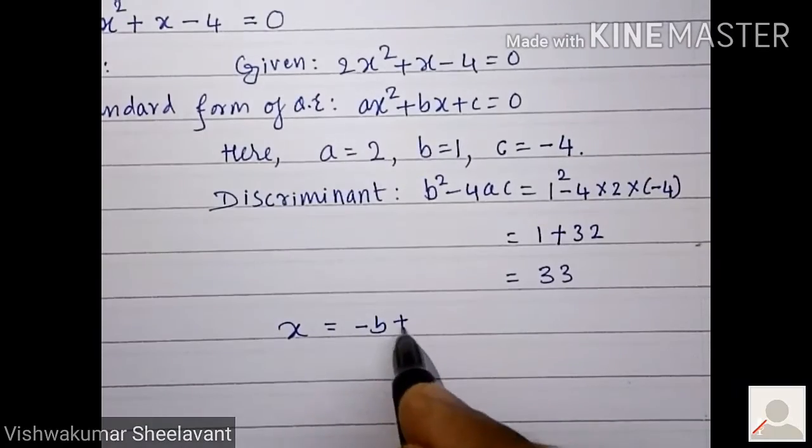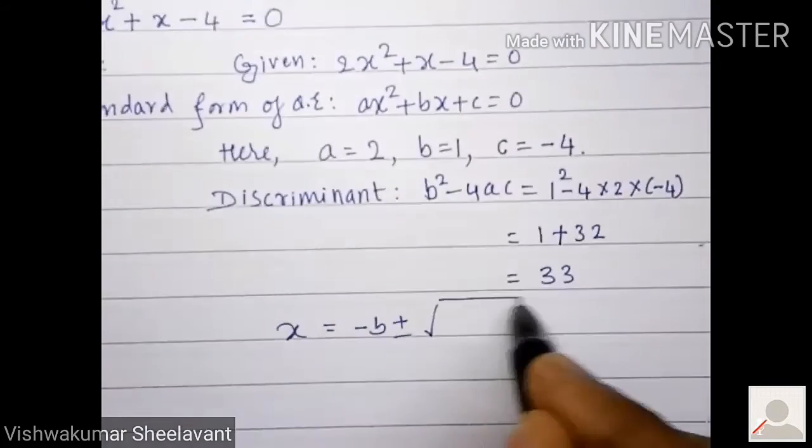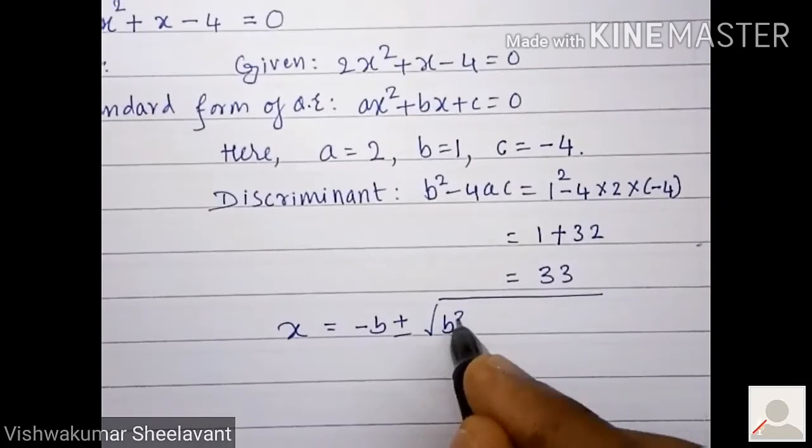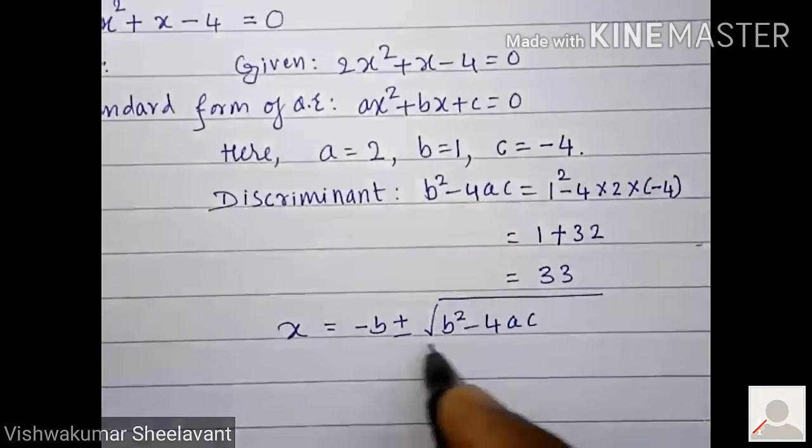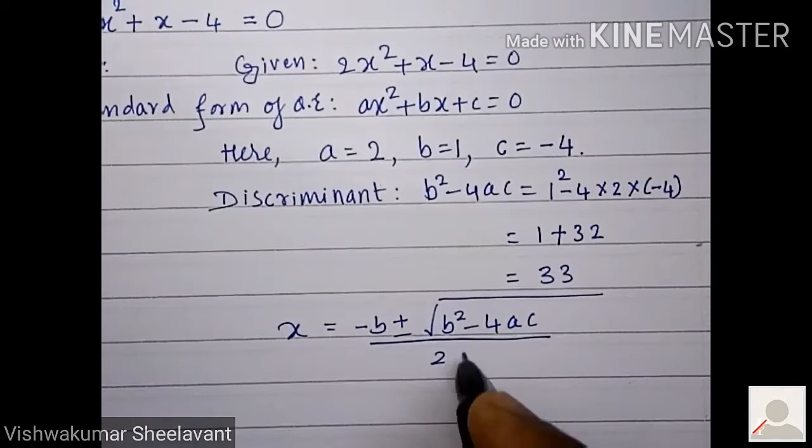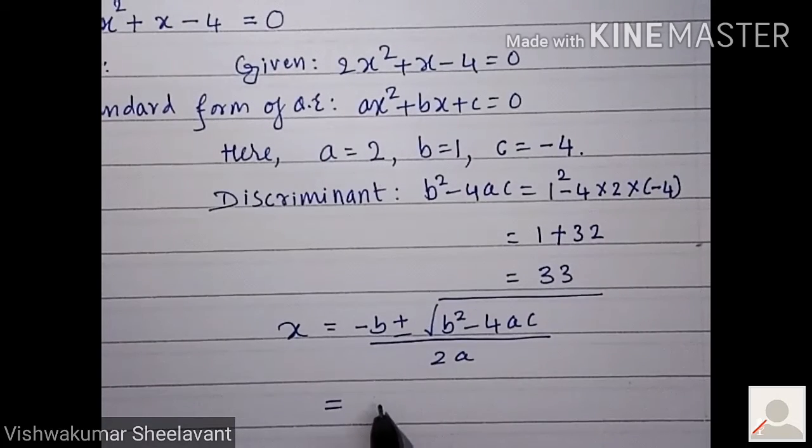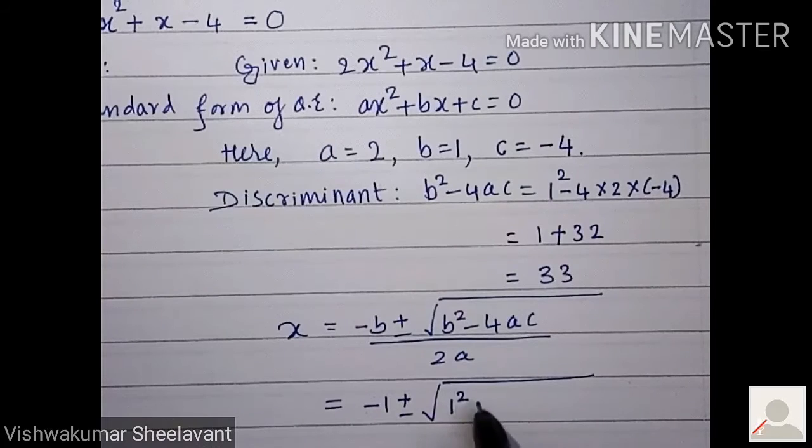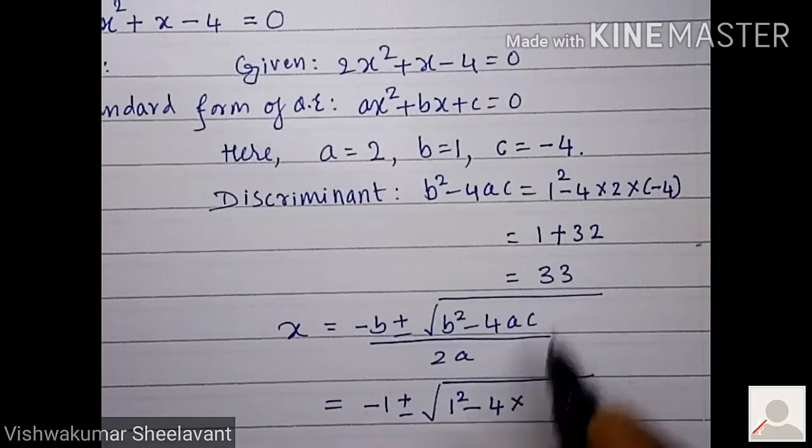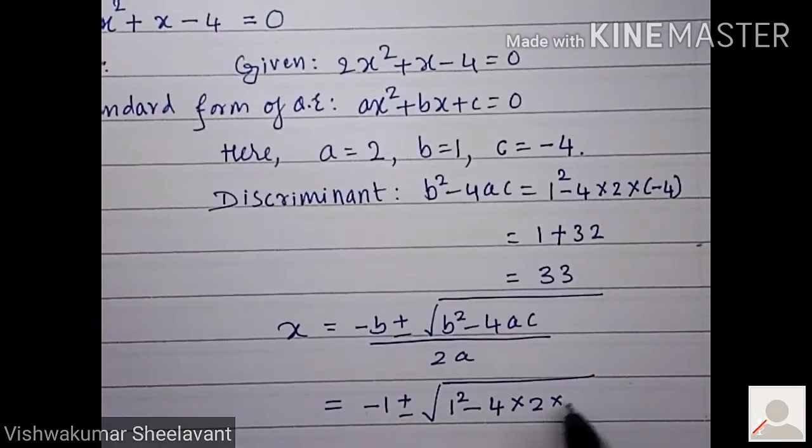The quadratic formula is minus b plus or minus under root b square minus 4ac upon 2a. Minus b means minus 1 plus or minus under root b square, which is 1 square minus 4ac. This value we have already obtained, minus 4, you can use directly.